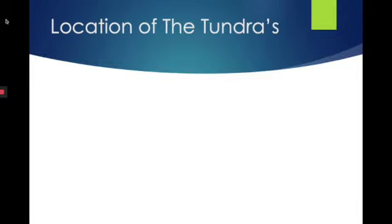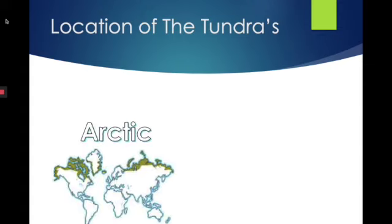Now we know the location of the tundra is in the northern part of the world. The arctic tundra specifically is located in North America, Greenland, Europe, and Asia.